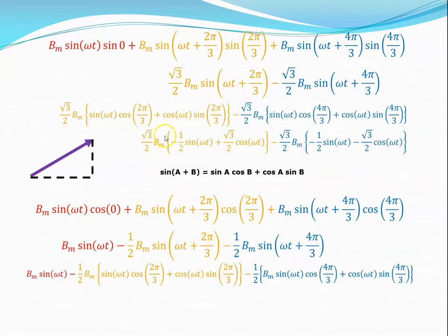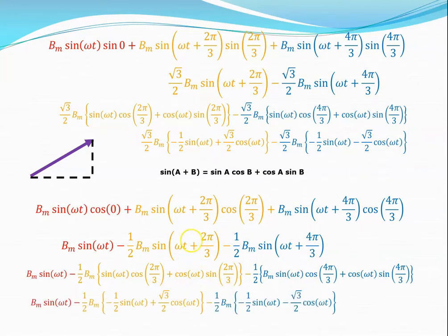Substituting the values: cosine(2π/3) = −1/2, so that becomes −1/2 · sine(omega T); sine(2π/3) = +√3/2. Cosine(4π/3) = −1/2, so that becomes −1/2 · sine(omega T); sine(4π/3) = −√3/2, so that becomes −√3/2 · cosine(omega T). The same substitutions apply to the horizontal components below.